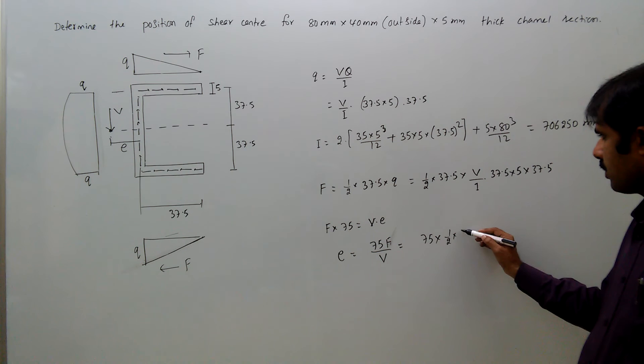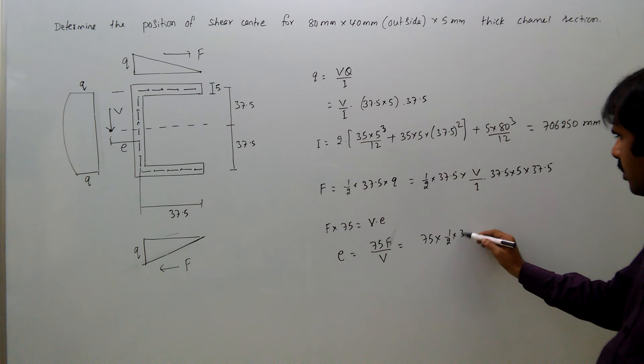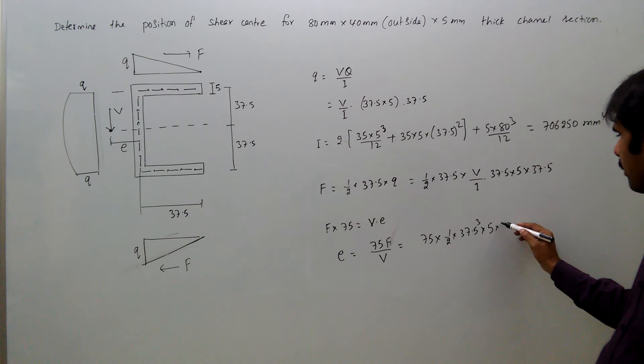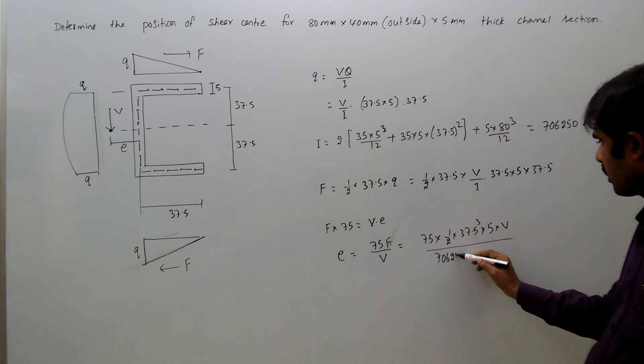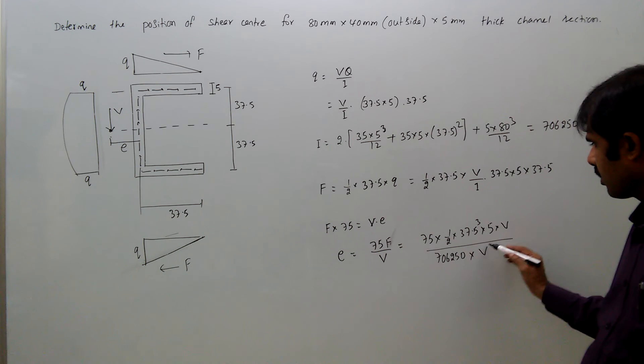75F/V equals 75 times F, which is half times 37.5 cubed—there are three 37.5 terms—times 5V, divided by I which we know is 706,250. So V cancels out.